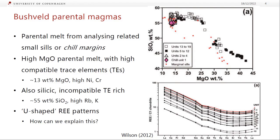It also has about 55% silica — which on the TAS plot would be an andesite, but andesites don't have 13% magnesium — so something else is going on. It also has very high rubidium and potassium, and a U-shaped rare earth element pattern. Basically following from heavier to lighter rare earths, it goes down at first then ticks back up, which is not a normal REE pattern like a mid-ocean ridge basalt or ocean island basalt.